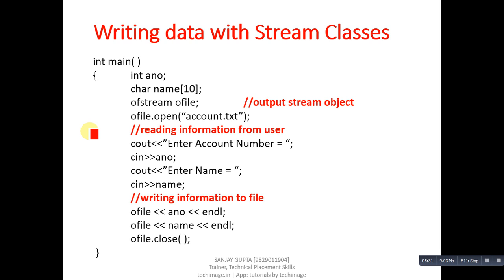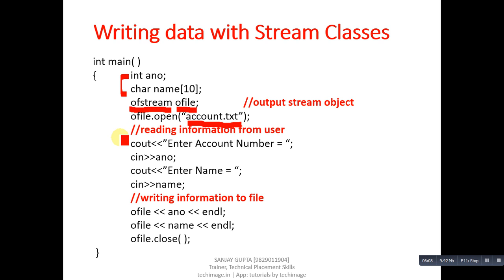This example demonstrates writing data to a file using stream classes. The program reads information from the user and stores it permanently inside a file. Two variables, account number and name, are declared of int and character type. Using ofstream, an object ofile is created, then ofile.open is linked with account.txt. Since we use ofstream, this file is opened in write mode. cout and cin statements read information from the user, then ofile replaces cout for writing — so account number and name are stored inside account.txt.